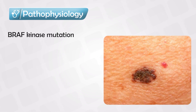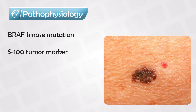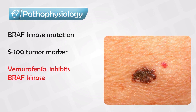The cancer cells start with BRAF kinase mutations, and these have a very specific marker: S100. It can be seen in some other cancers like schwannoma, but other than that it's pretty much melanoma — which is why we have a medication that specifically inhibits the BRAF enzyme. That's vemurafenib, and it is very effective, with significant anti-tumor effects.